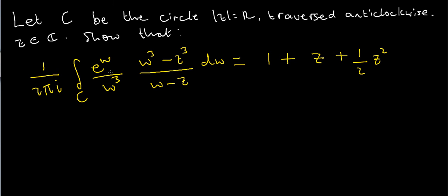I've got this function, e to the w divided by w cubed times w cubed minus z cubed times w minus z, dw, and I'm asked to integrate this function over the contour C, where C is just a circle, modulus of z equals r, centered at the origin of radius r, traversed anti-clockwise, and z is just any complex number.